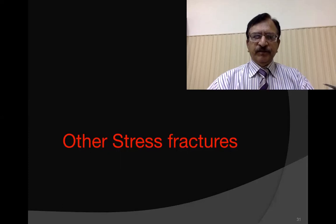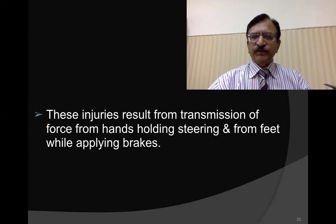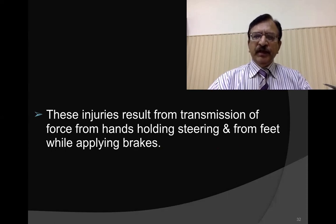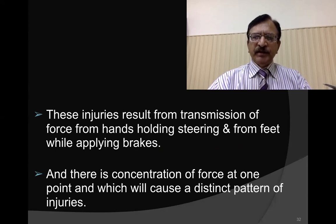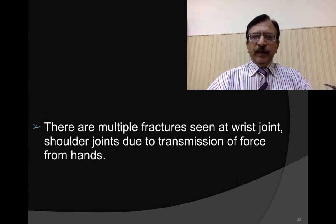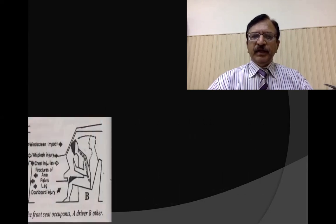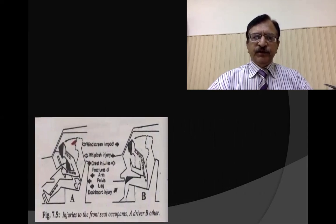Stress factor injuries result from transmission of force from the hands to the shoulder — when the driver is holding the steering column — and from the feet through the legs to the hip joint when applying the brakes. The hip joint and shoulder joint are the concentration points of force and therefore the target points for fracture. Multiple fractures are seen at the wrist and shoulder joints due to force transmission, and likewise, force transmitted through the legs causes fracture of the neck of the femur.